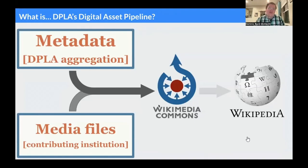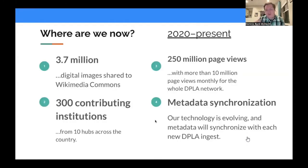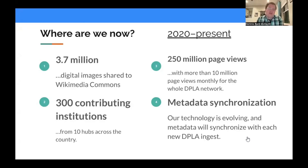Since the start of 2020, we have launched what we call our digital asset pipeline to Wikimedia. Just a quick summary of what we've accomplished so far since 2020: DPLA is now the single biggest contributor to Wikimedia Commons. We have uploaded over 3.7 million files to Wikimedia Commons, generated 250 million page views, and there are over 300 contributing institutions across the United States.